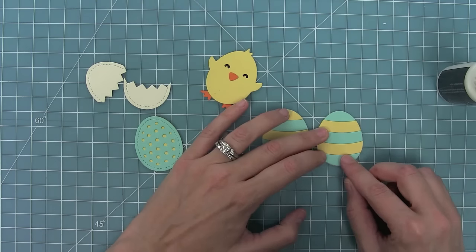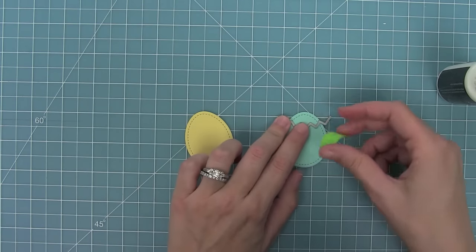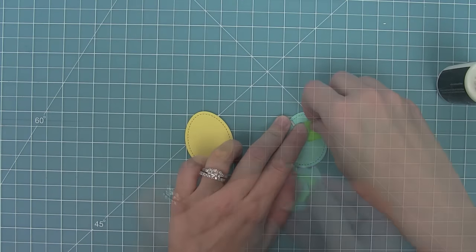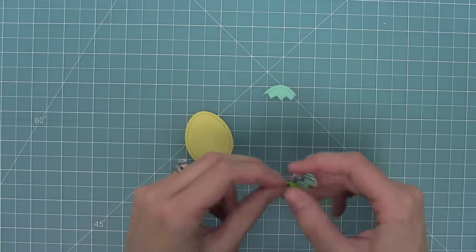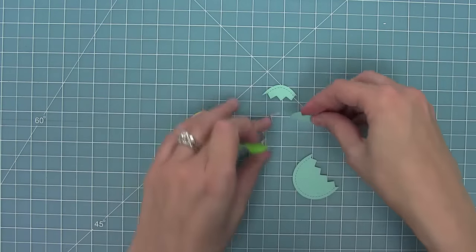To go along with my striped theme I thought it would be fun to take that cracking egg piece and actually create a chevron egg. I'm going to take this die, start it up towards the top and move it all the way down my egg cutting little chevron pieces.